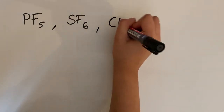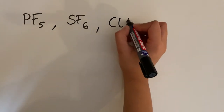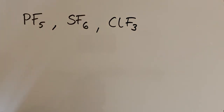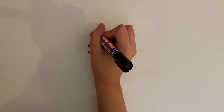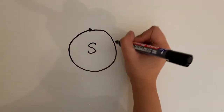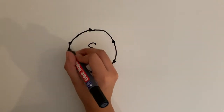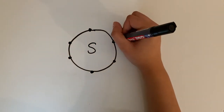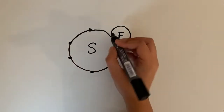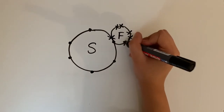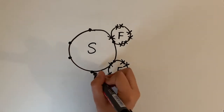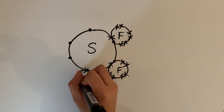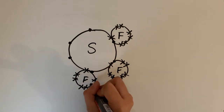Chlorine should technically only form one bond, but there are many examples where it forms more than one. Let's look at sulfur hexafluoride in detail. Sulfur is in group six, so it has six outer electrons. Fluorine wants to bond with those, but fluorine can't expand its octet, so fluorine must always form just one covalent bond. When we draw all the electrons in, sulfur ends up with more than eight electrons in its outer shell — in fact, it has 12 outer electrons.